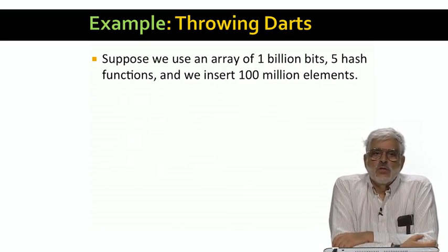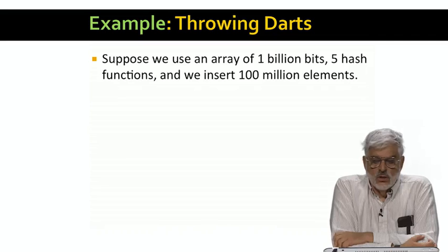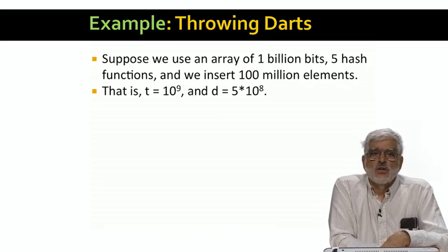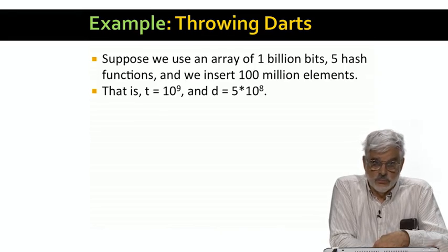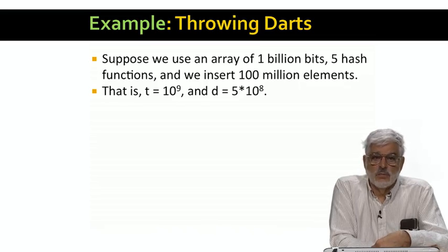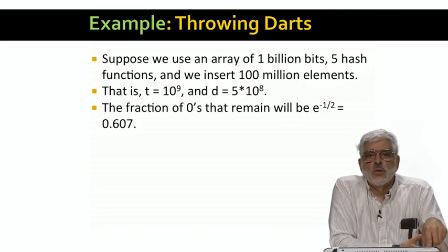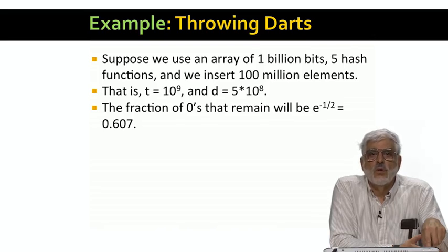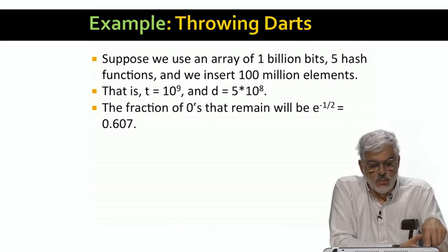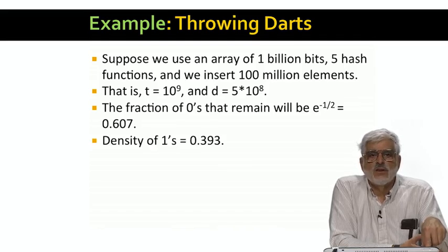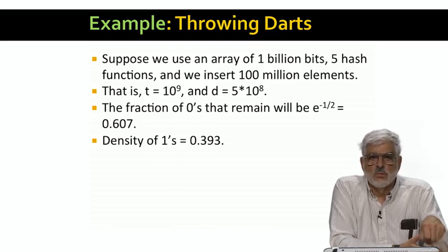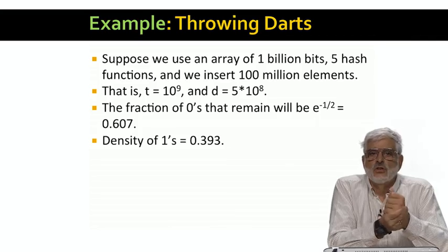For example, let's use a bloom filter consisting of a billion bits, and let's use five hash functions. Suppose we insert a hundred million elements. Then we do half a billion hashes. So we might set to one as many as half the bits in the array. In terms of darts and targets, t is a billion targets and d is 500 million darts, or half of t. Using the formula we derived on the previous slide, the fraction of bits that remain zero will be e to the minus d over t, or e to the minus 1 half. This value is 0.607, or put another way, the fraction of 1's will be 0.393, somewhat less than half. The fact that it is less than half is explained by the existence of collisions as we apply all the hash functions to all the elements that are inserted.